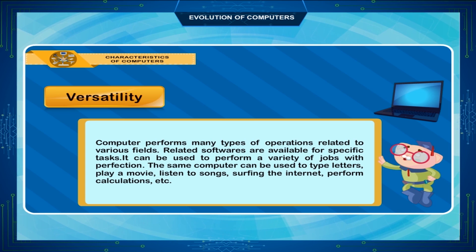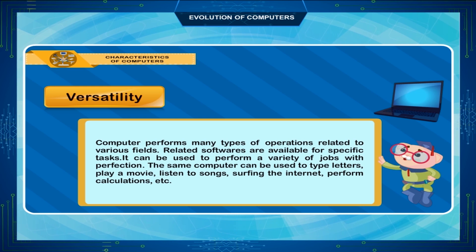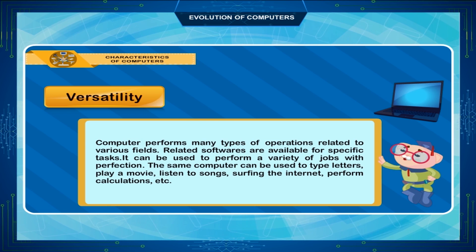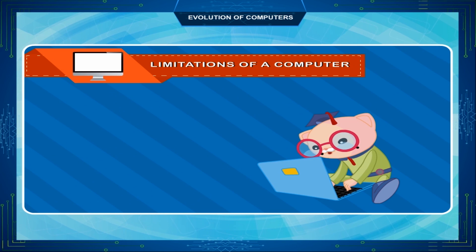Versatility: Computers perform many types of operations related to various fields. Related software is available for specific tasks, and it can be used to perform a variety of jobs with perfection. The same computer can be used to type letters, play a movie, listen to songs, surf the internet, and perform calculations.